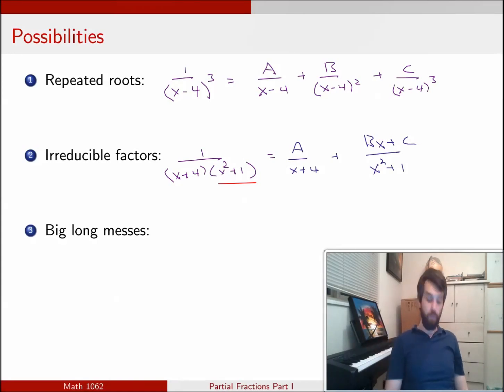Now in principle, these can get just kind of messy. Maybe I'm going to have x plus 4 squared, and then an x minus 1 squared, and let's put that irreducible factor in, x squared plus 1. It can be this really, really long, big mess.